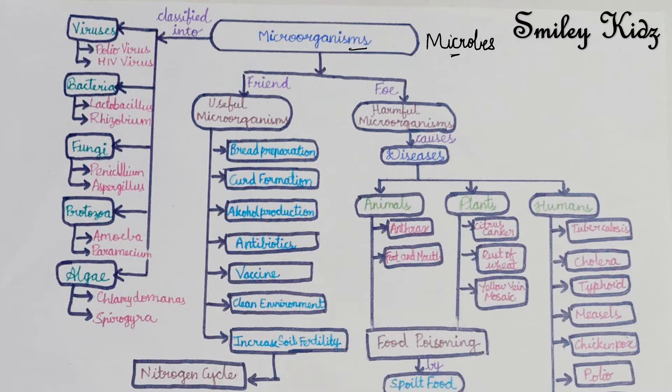These microorganisms are classified into viruses, bacteria, fungi, protozoa, and algae. Here for each of them we have given two examples. For viruses we have polio virus and HIV virus. For bacteria we have lactobacillus and rhizobium. Fungi: penicillium and aspergillus. Protozoa: amoeba and paramecium.